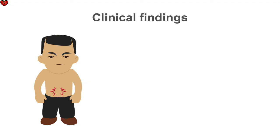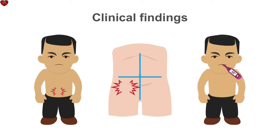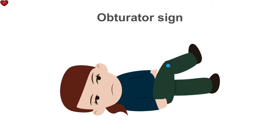Acute appendicitis usually begins with vague, often colicky epigastric or periumbilical pain, which localizes to the right lower quadrant over the next 12 hours. On exam, patients have moderate fever, right lower quadrant tenderness, guarding, rebound tenderness, and a positive obturator sign.